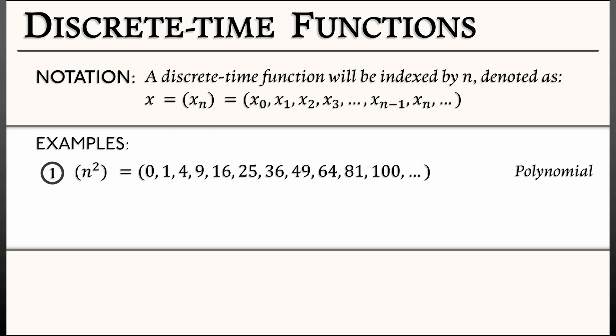What about other types of discrete input functions? Well, consider the function 2 to the n. That is 1, 2, 4, 8, 16, 32, 64, etc. This would be an example of an exponential function of n. And there would be lots of others as well. This one just has base 2.